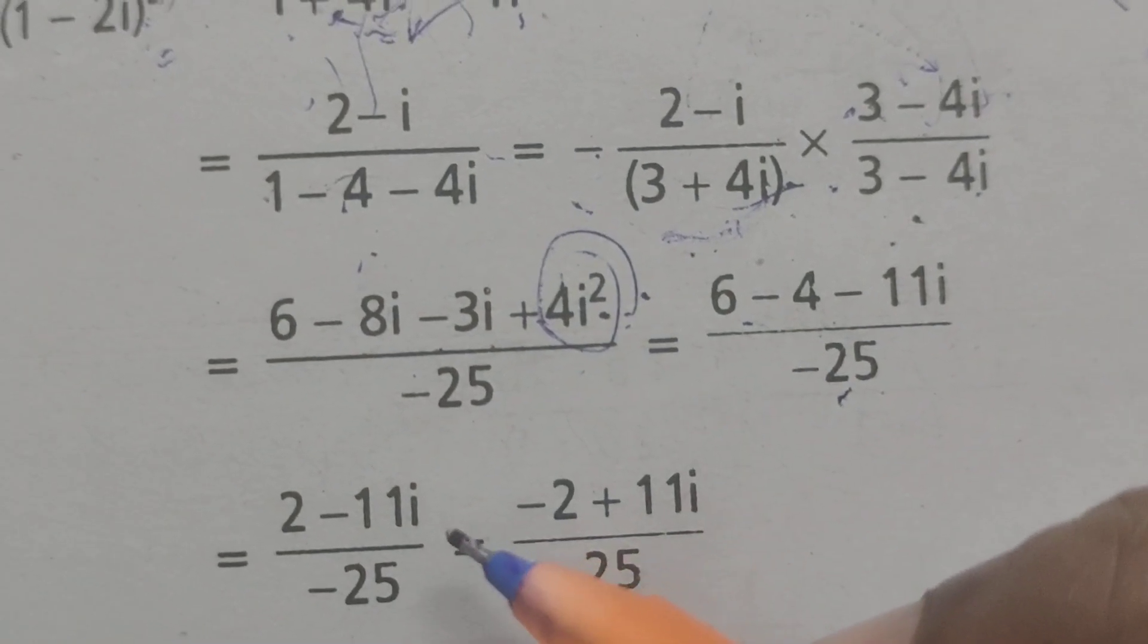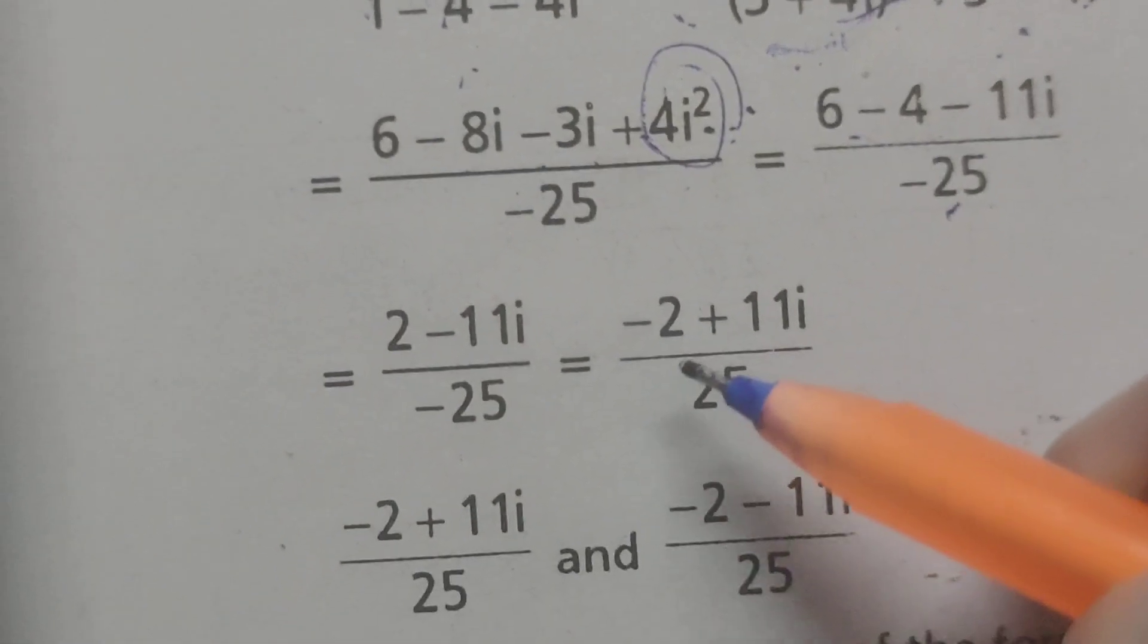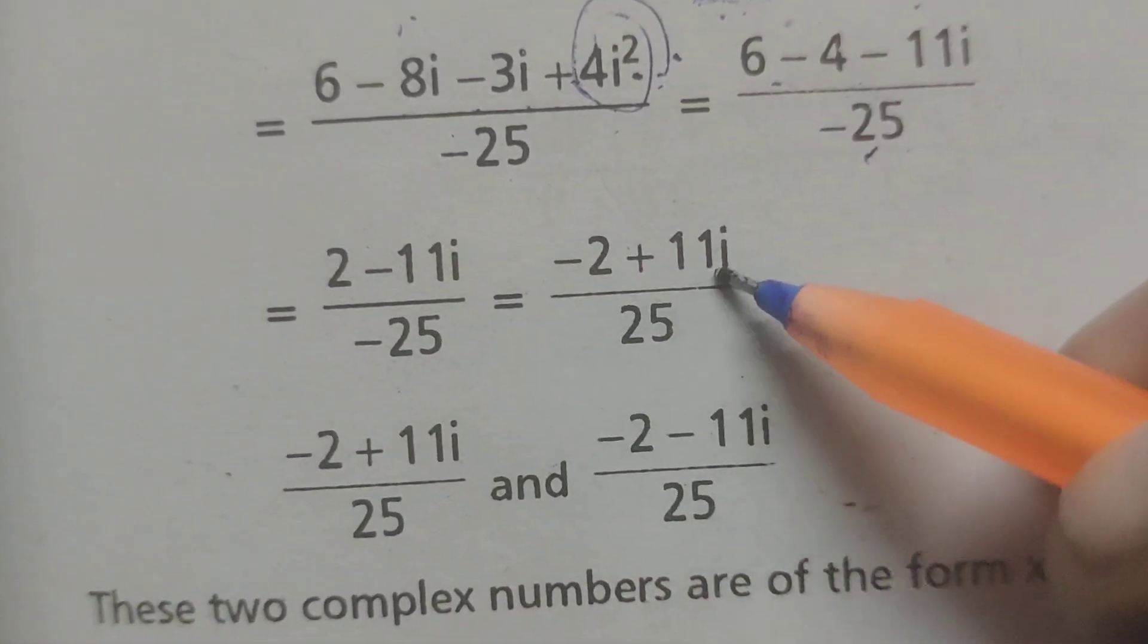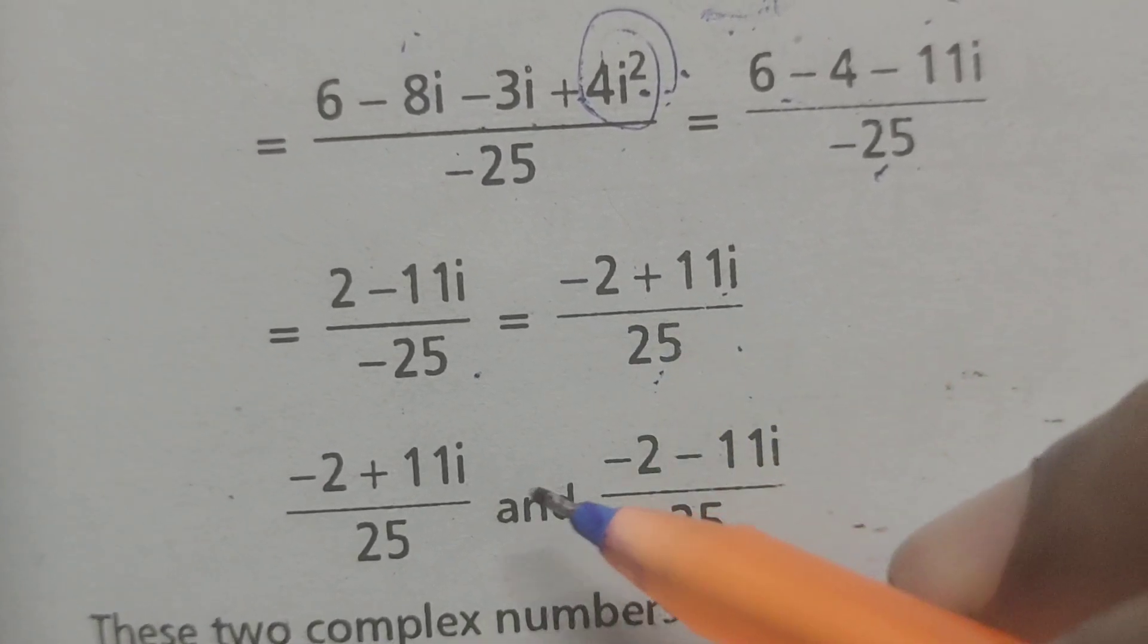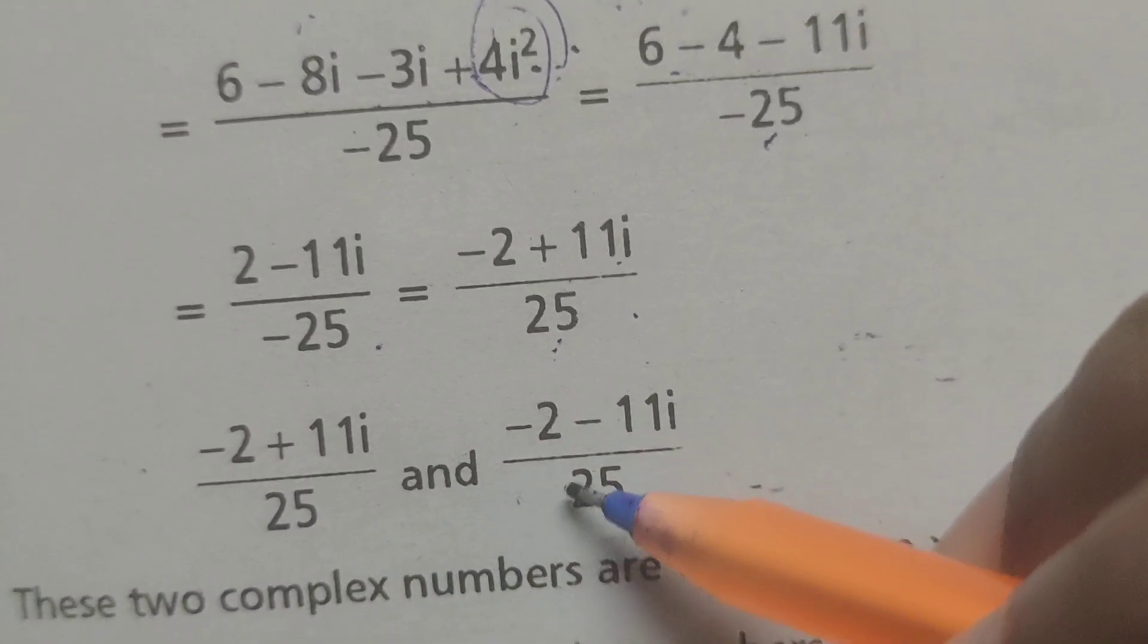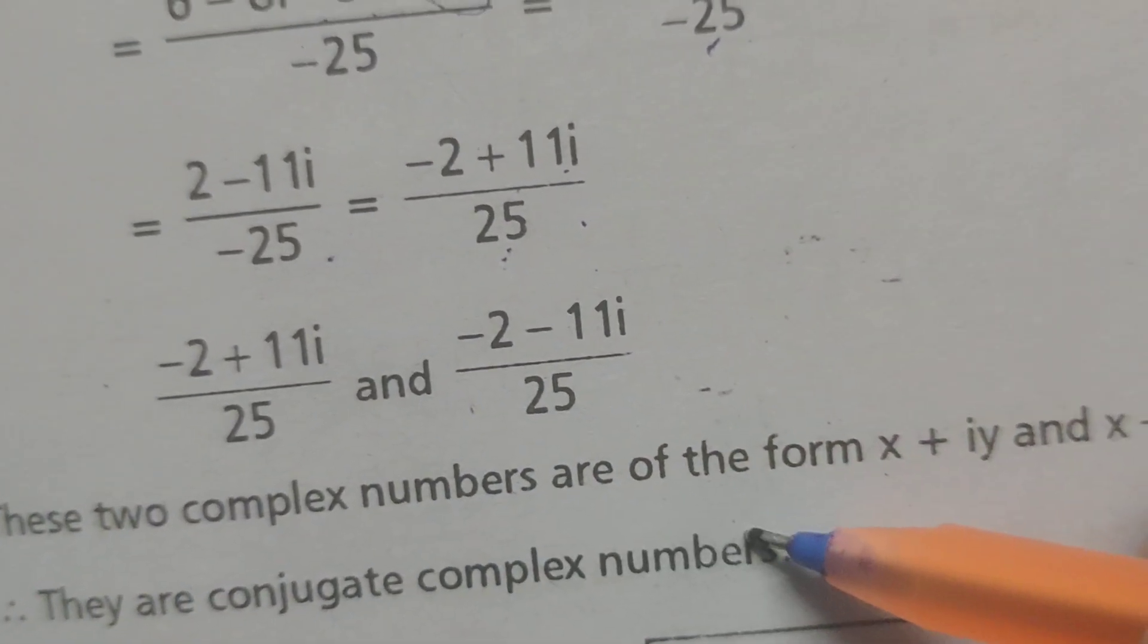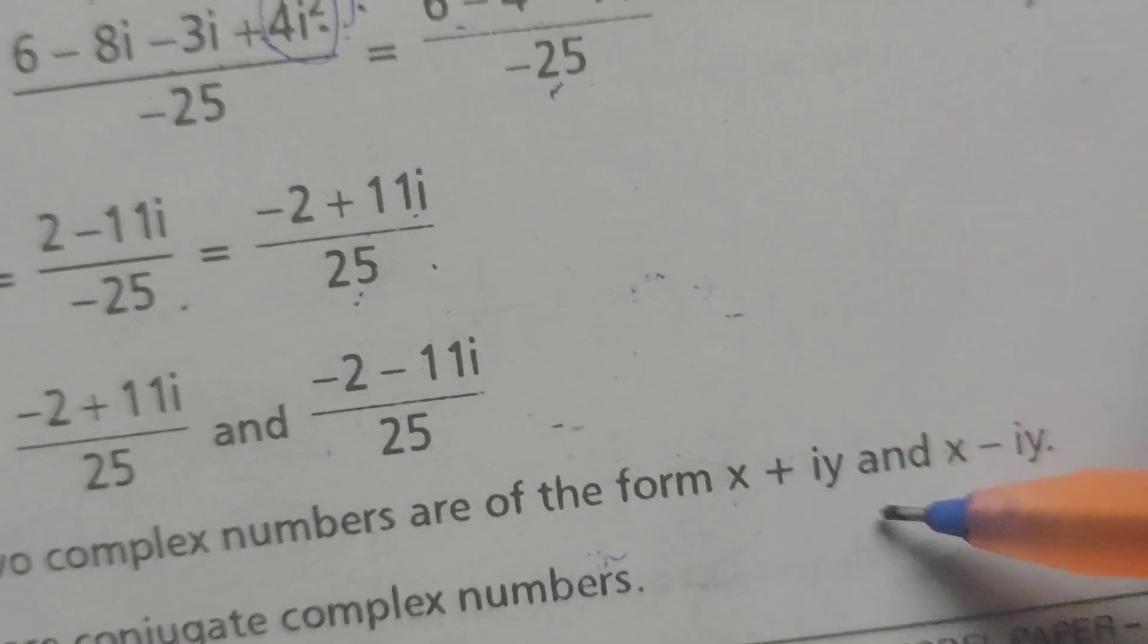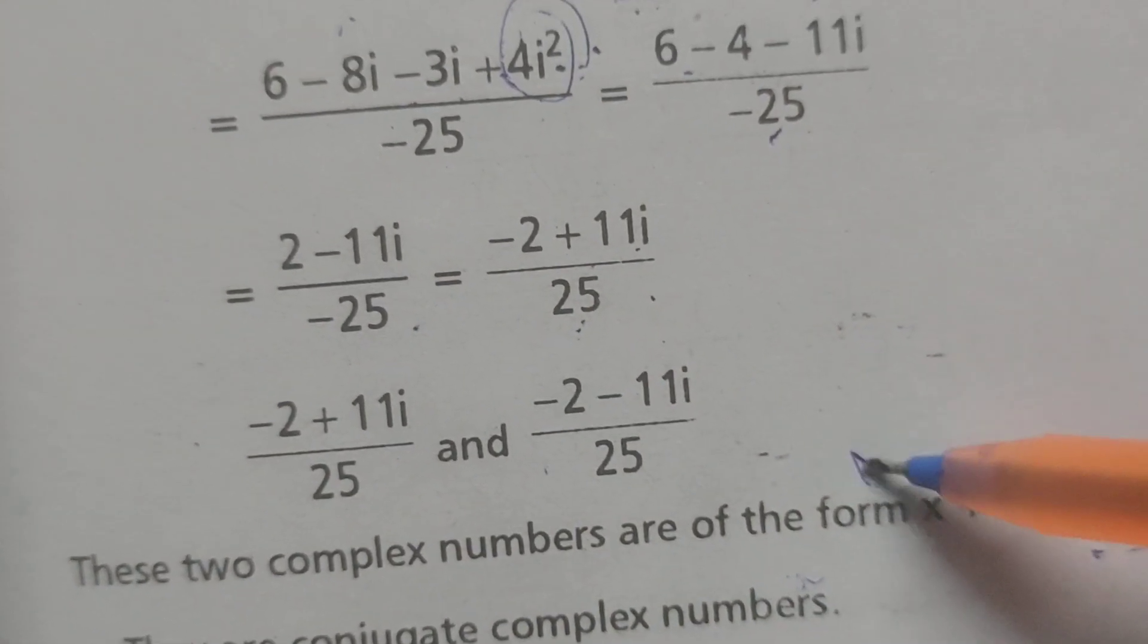This equals (-2+11i)/25, which can be written as (-2+11i)/25 and (-2-11i)/25. These two complex numbers are of the form x+iy and x-iy. They are conjugate complex numbers.